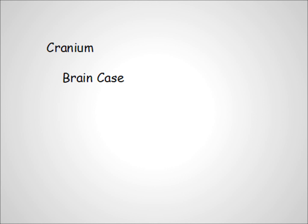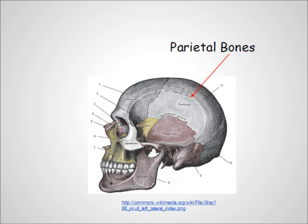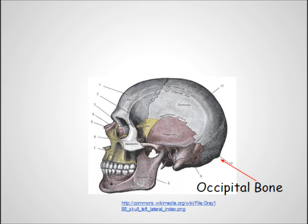Looking at the illustration, the skull consists of two separate parts: the cranium, or brain case, and the facial bones. The cranium consists of the bones that actually touch the brain. The frontal bone is the big bone of your forehead. Behind that are the two parietal bones. Then, at the base of the skull, is the occipital bone.